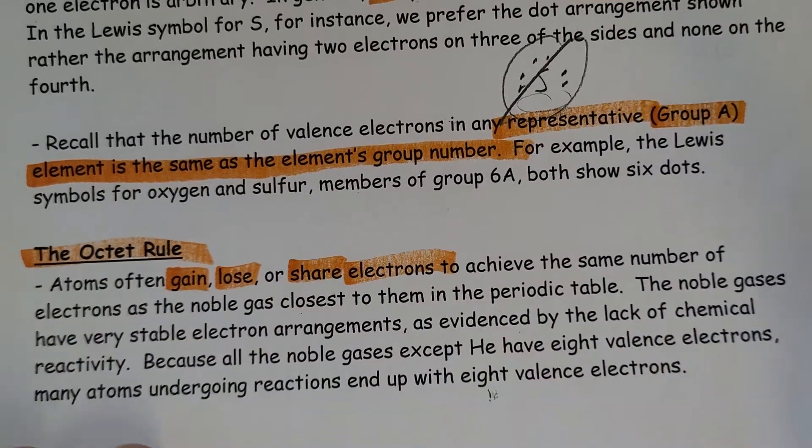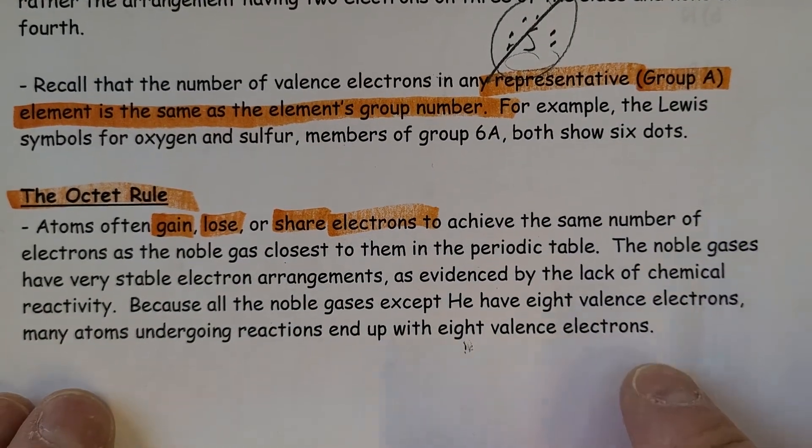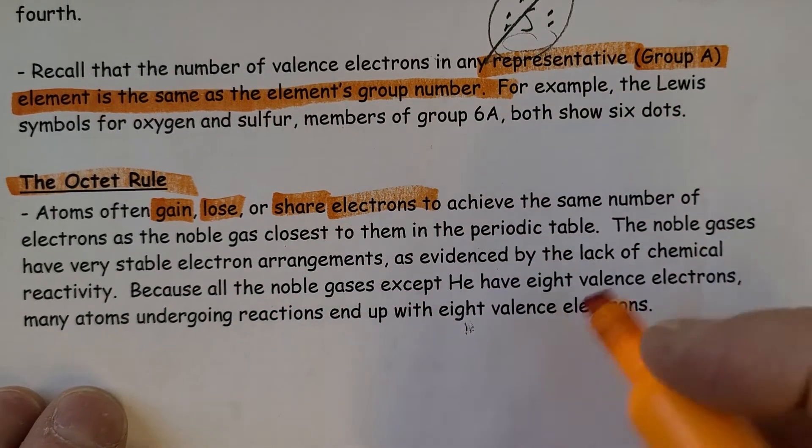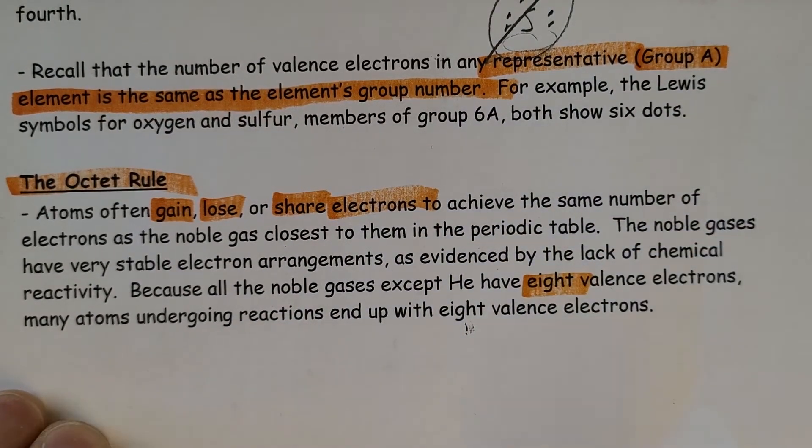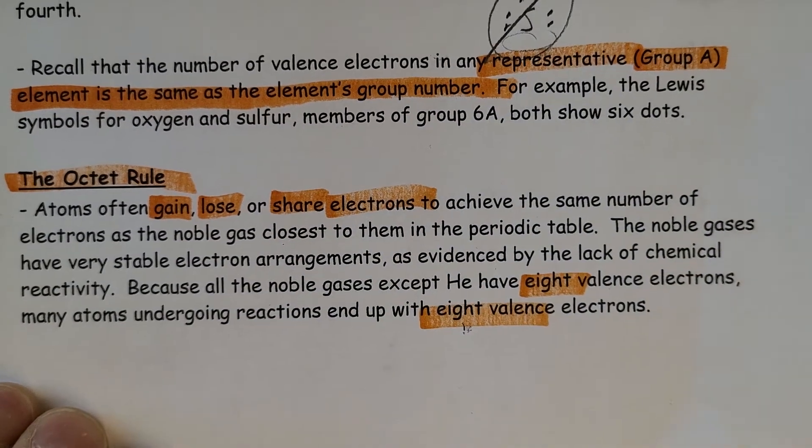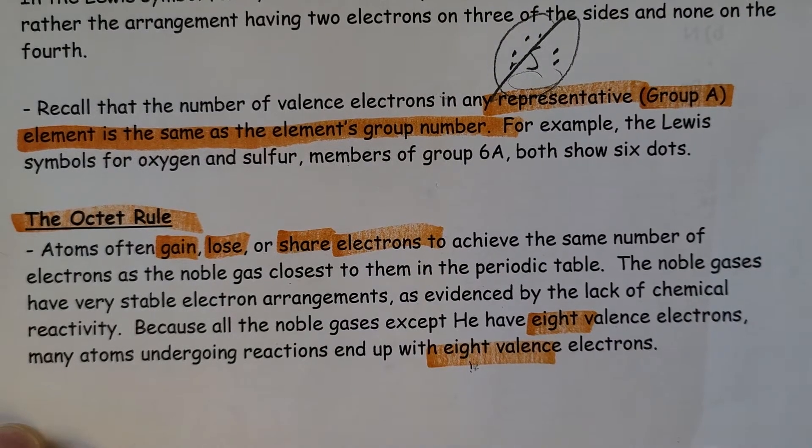Noble gases have a very stable electron arrangement, as evidenced by the lack of chemical reactivity. Because all the noble gases except helium have eight valence electrons, many atoms undergoing reactions try to end up with eight valence electrons as well.